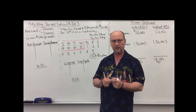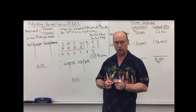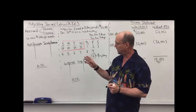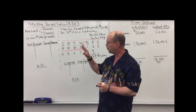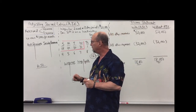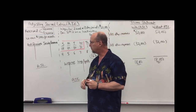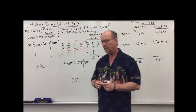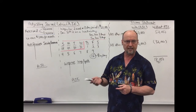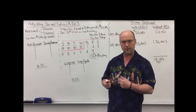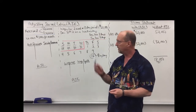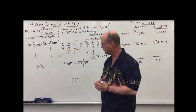We're going to look at adjusting journal entries. Specifically, we're going to look at accruals — accrued revenue and accrued expense. In a different video we look at deferrals: deferred revenue and deferred expense. Here we're looking at accruals.